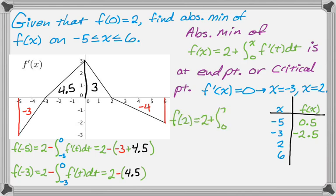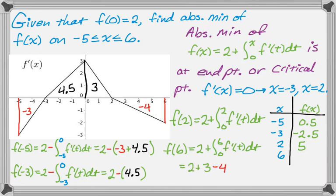Now we need f of 2. So now 2 is to the right of our kind of initial condition. So we're just going to add the definite integral. And then when we get 6, we have to go from 0 to 6. So we go 2, and then we add 3, and then we subtract 4. So we end up at 1. So the question was to find the absolute minimum. In the table, you can see that the absolute minimum is negative 2.5. It occurs at x equals negative 3. Usually I write that out, but you can see from the screen here, I just don't have the space.